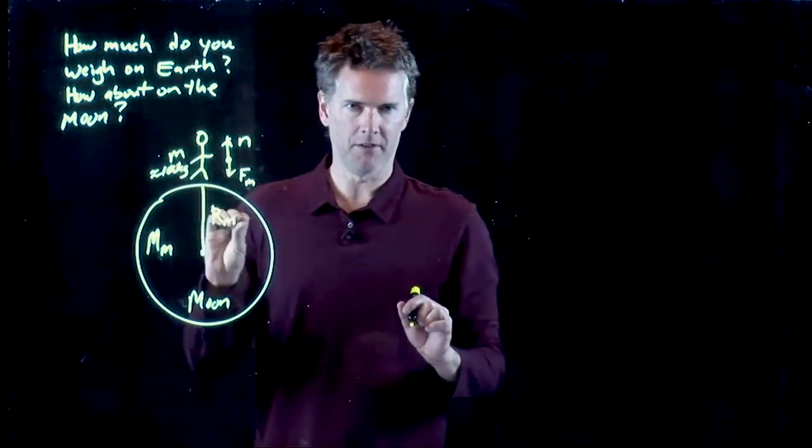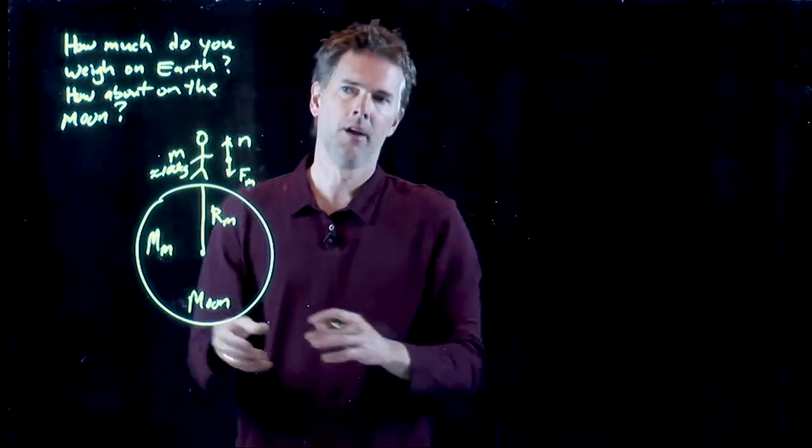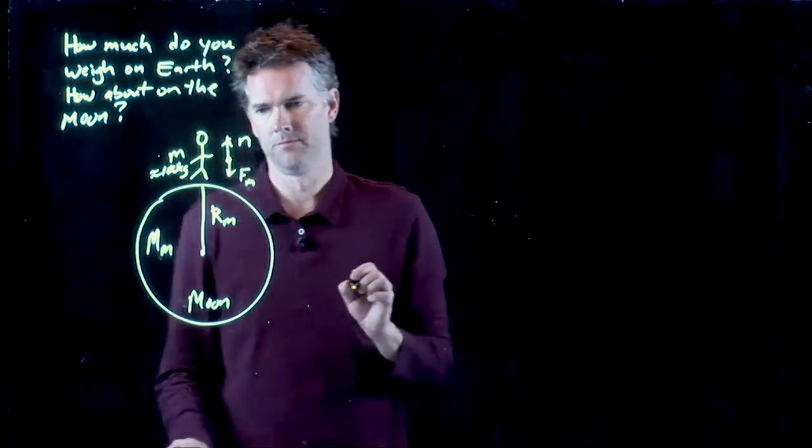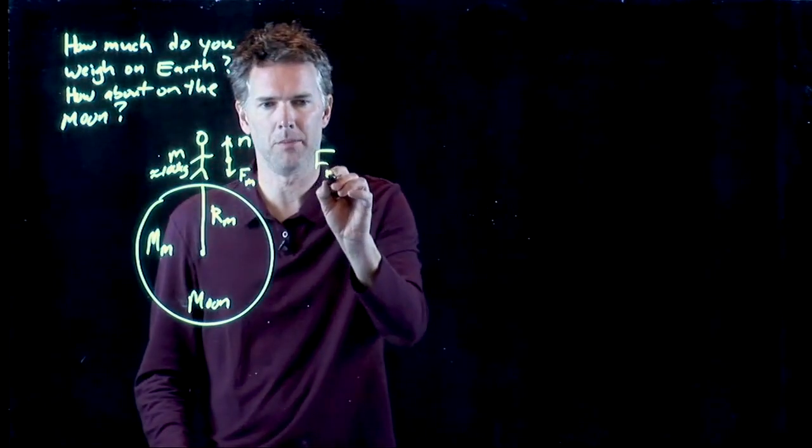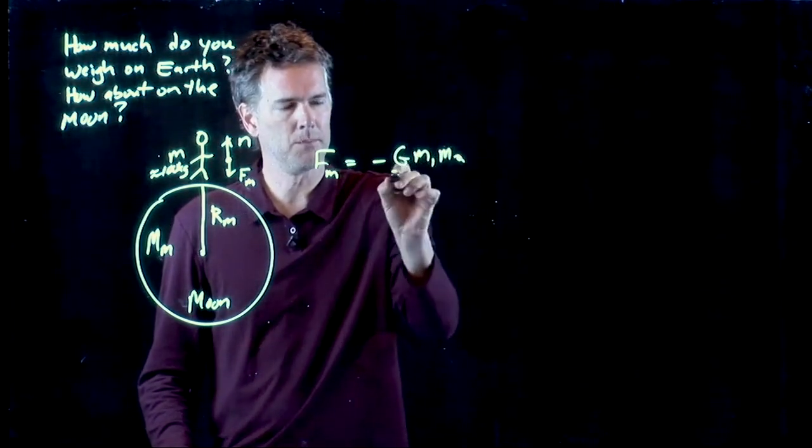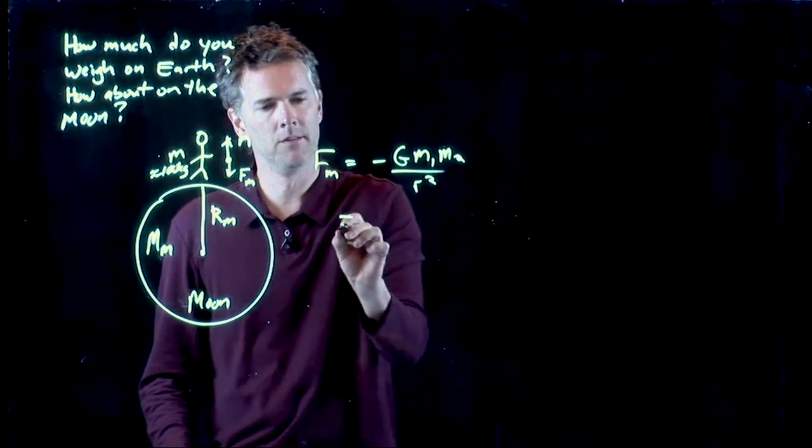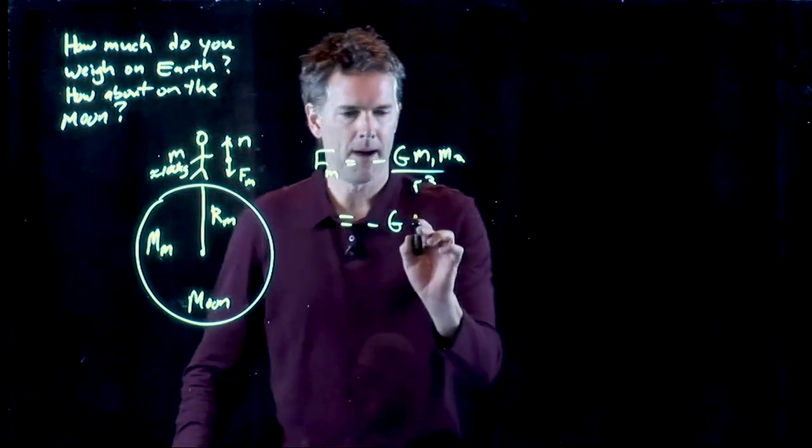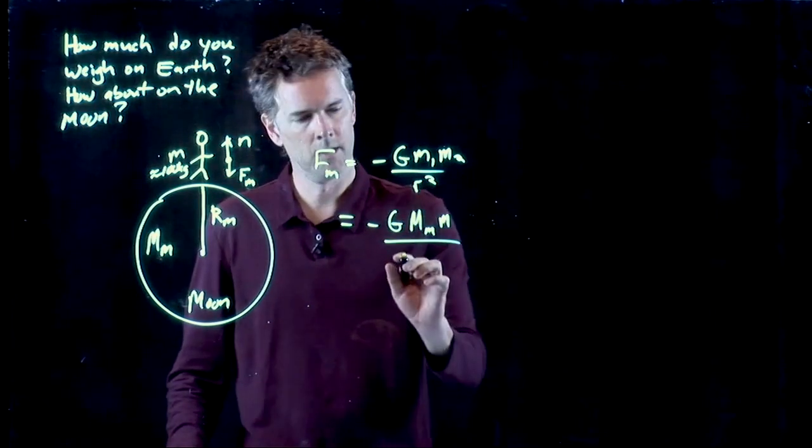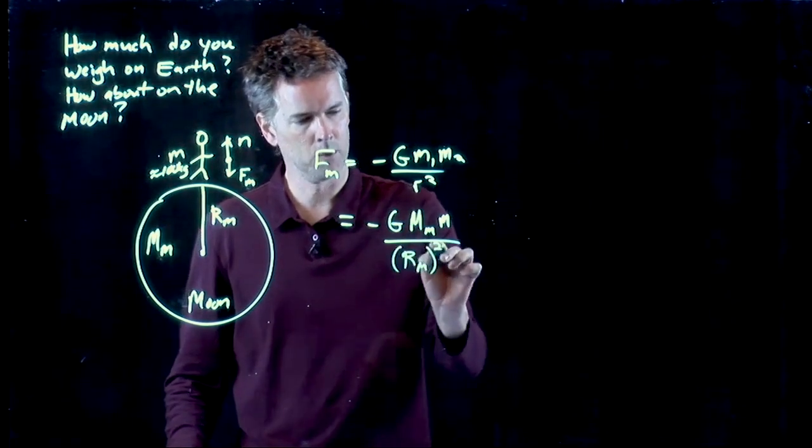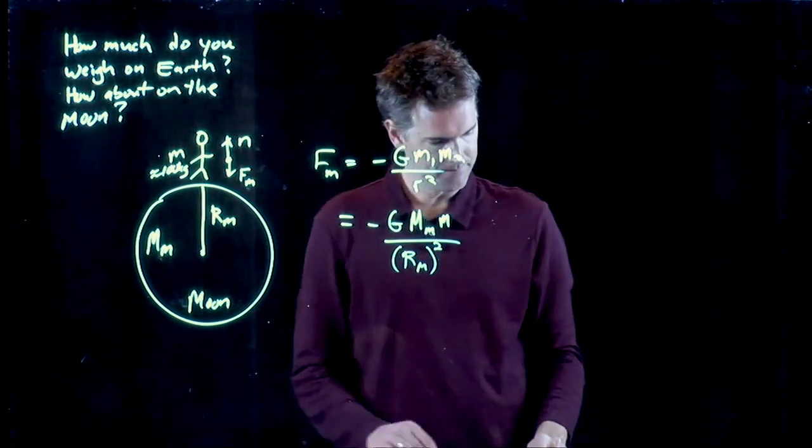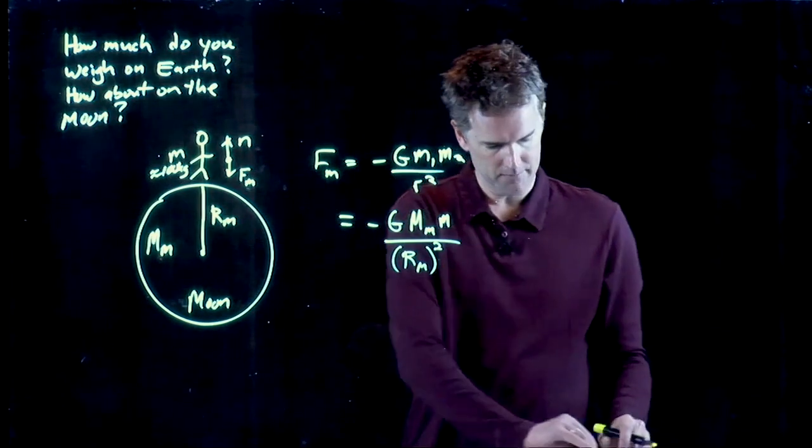Your mass, of course, stays exactly the same. If you have a mass of 100 kilograms on the Earth, you go to the Moon, you're still a mass of 100 kilograms. What changes is the force on you. And let's calculate what f sub m is in this case. It's still negative g m1 m2 over r squared. But now, of course, we have the mass of the Moon, the mass of you, and the radius of the Moon, quantity squared. And let's punch in some of those numbers and see what we get. I have them right here for you.